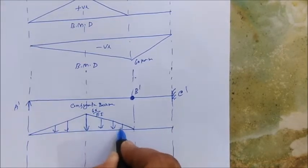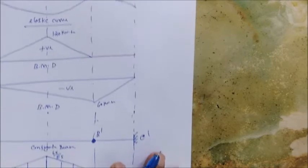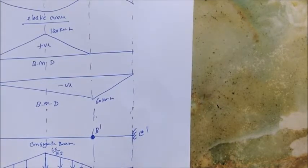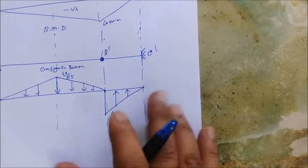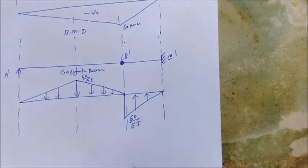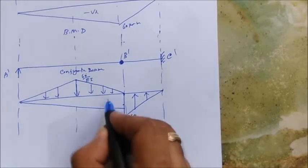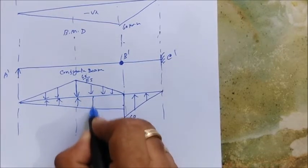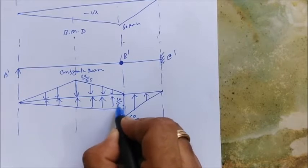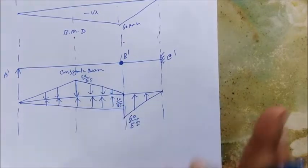Now in the portion BA, once again it's 2EI so I divide by 2, giving 30/EI, and it linearly increases. So the loading is: 30/EI at B on the AB side, 60/EI at the peak, and 30/EI on the other side. This is the complete loading on the conjugate beam.